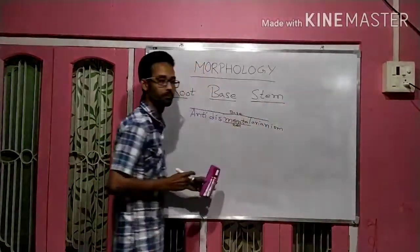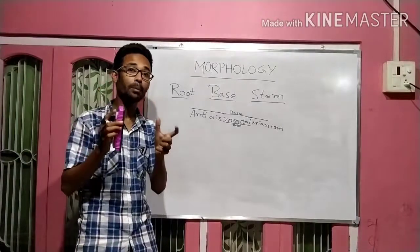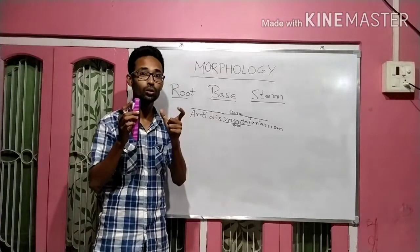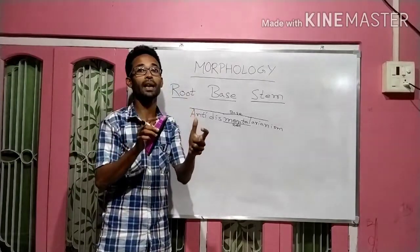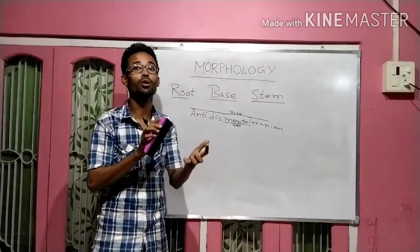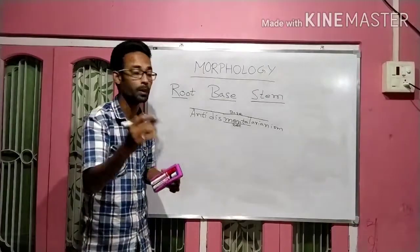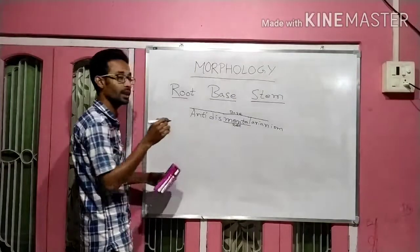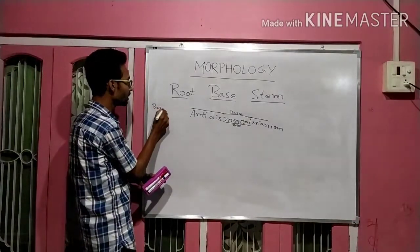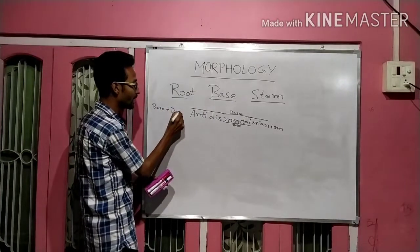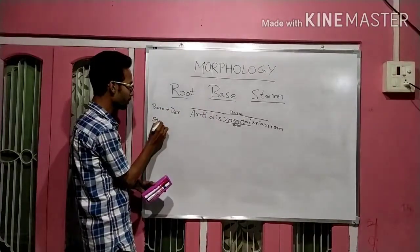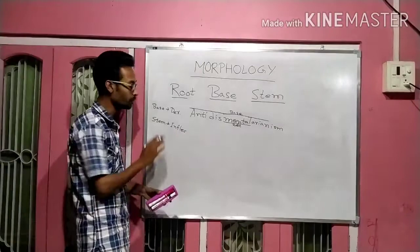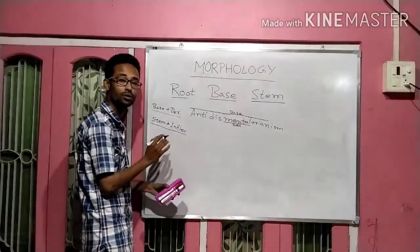What is a stem? Stem is that part of a word which is related to inflectional morphemes, whereas the base is always related to derivational morphemes and stem is always related to inflectional morphemes.